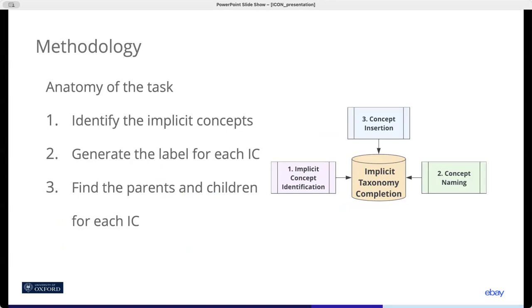The key here is to decompose the task into more manageable subtasks. With ICON, we first identify the possible semantics of implicit concepts from the data. Next, we generate a label or name for each implicit concept. And finally, we insert them into the taxonomy, which practically just means finding their parents and children.